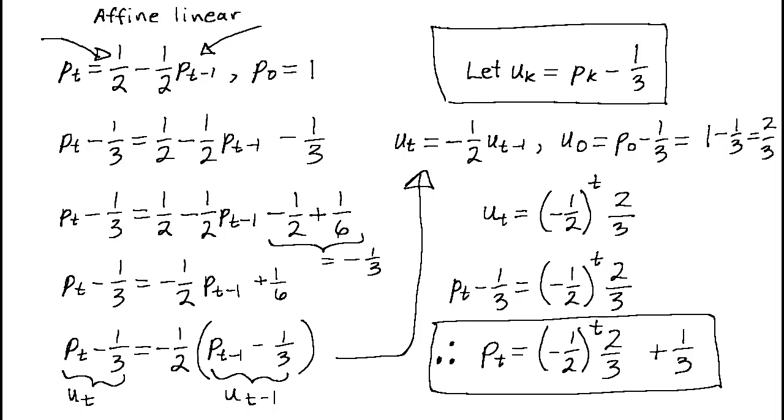At this point, you might be thinking that the decision to create a new variable u by subtracting one-third from the old variable p appears to be unmotivated. I will say that creating a new variable in this way is a standard approach to solving the kind of affine linear equation we have in this example. I'll also say that in order to decide on one-third, I applied a systematic method that you can adapt to similar situations in the future. Here's what I did.